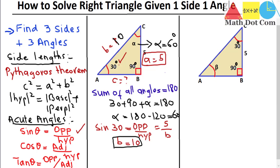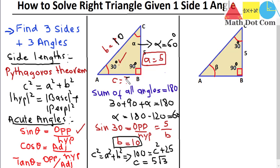Now one side remains: c. We can find it using the Pythagorean theorem, which requires two known sides to find the third. Writing C² = A² + B² — remember, in the Pythagorean theorem C always represents the hypotenuse — we have: 10² = 5² + c², so 100 = 25 + c², giving c = 5√3. We now have all three sides and all three angles of the right triangle — it is solved.